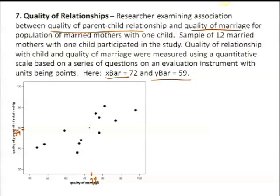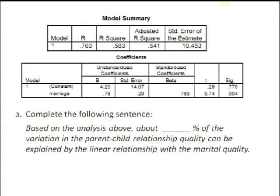We have output to use. One question asks: about what percent of the variation in the parent-child relationship quality can be explained by its linear relationship with the marriage quality measure? I'm asking you for r-squared—actually for r-squared as a percent. Find it right in the output: R-squared. What do I write? 58.3%. The adjusted r-squared would be used if you have more explanatory variables in the model than just one, because it adjusts for how many explanatory variables are included. We don't have to worry about it when there's only one x. If there were more x's, we'd use the adjusted one, but we didn't do multiple regression here.